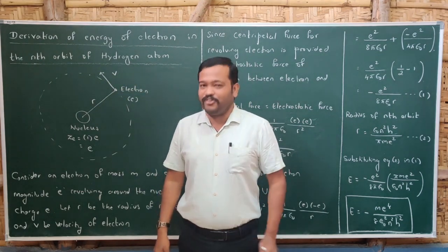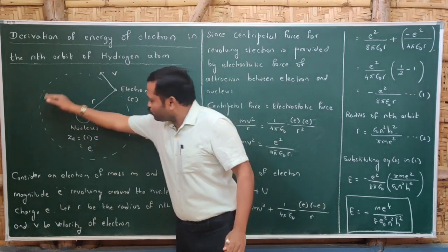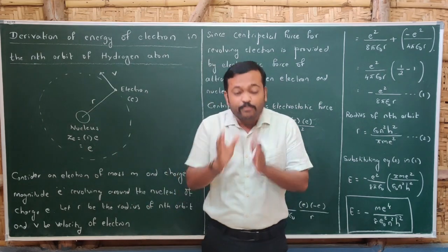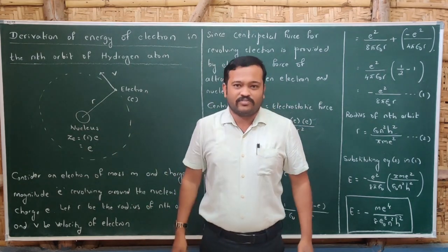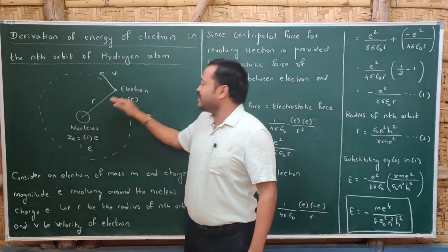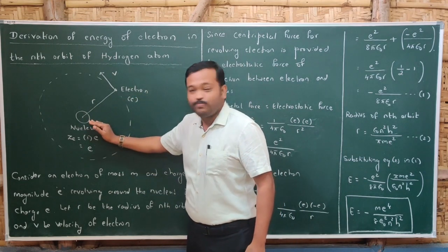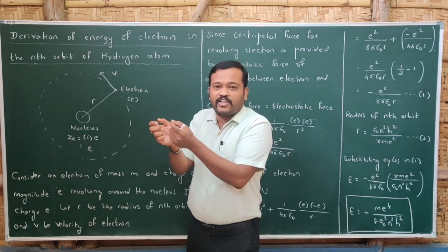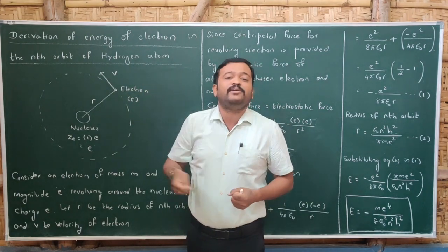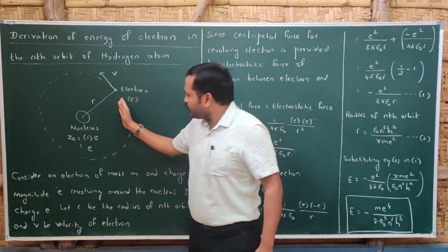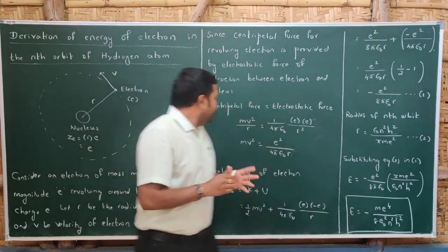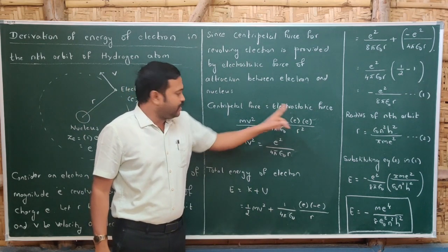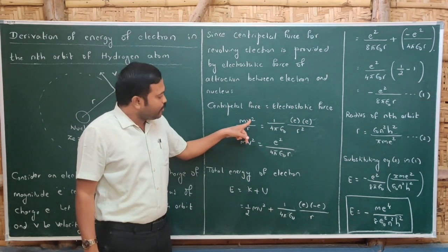According to Rutherford, the electrons revolving around the nucleus do so due to the centripetal force, and that centripetal force is provided by the electrostatic force of attraction between the nucleus and the electron. Since the nucleus is positively charged and the electron is negatively charged, there is a force of attraction, and that force provides the necessary centripetal force. Therefore, centripetal force equals electrostatic force.